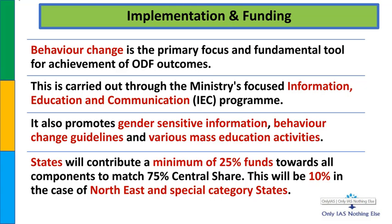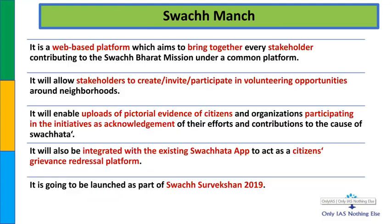Implementation और funding की बात करें तो सबसे पहला काम ODF - open defecation free का awareness लोगों तक पहुंचाना और behavioral change लाना है. Funding में normal districts में 25:75 ratio है - 25% state का और 75% central share. Northeastern और special status categories वाले states को केवल 10% contribute करना पड़ेगा और बाकी 90% central government देगी.